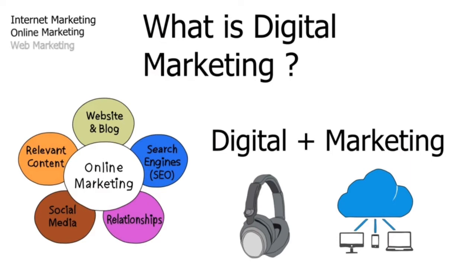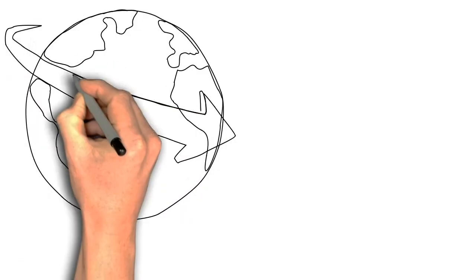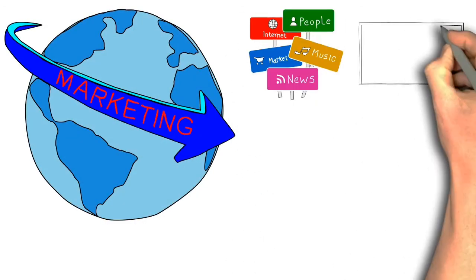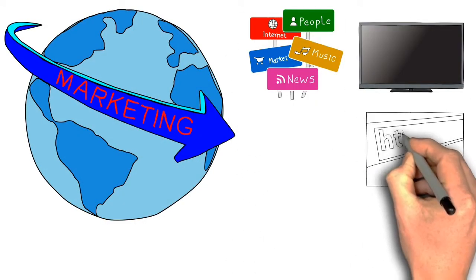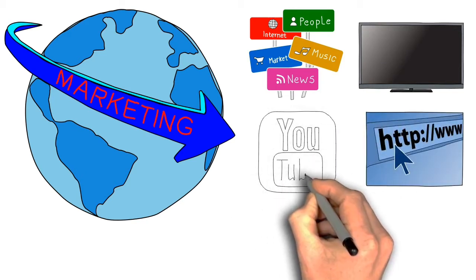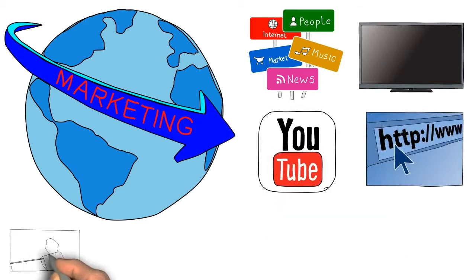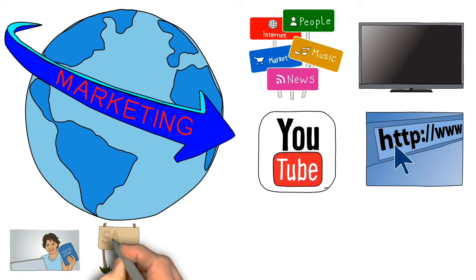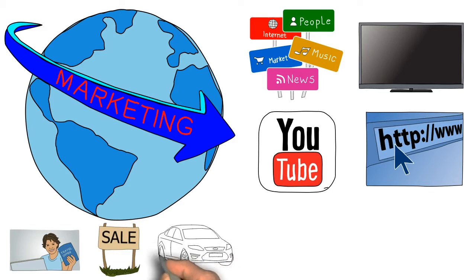Now let's take a look at an example. If we have a product or service to market, we can use newspapers and TV, a website, a YouTube channel, banners, and distribute them. So we have two ways to do our product or service marketing.